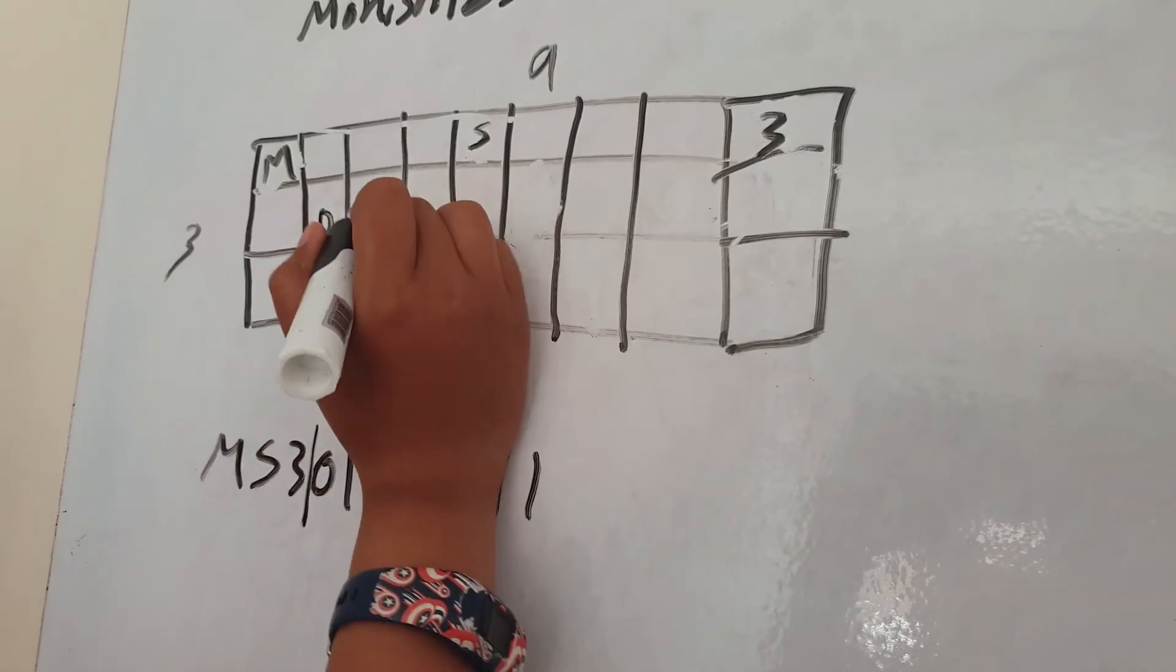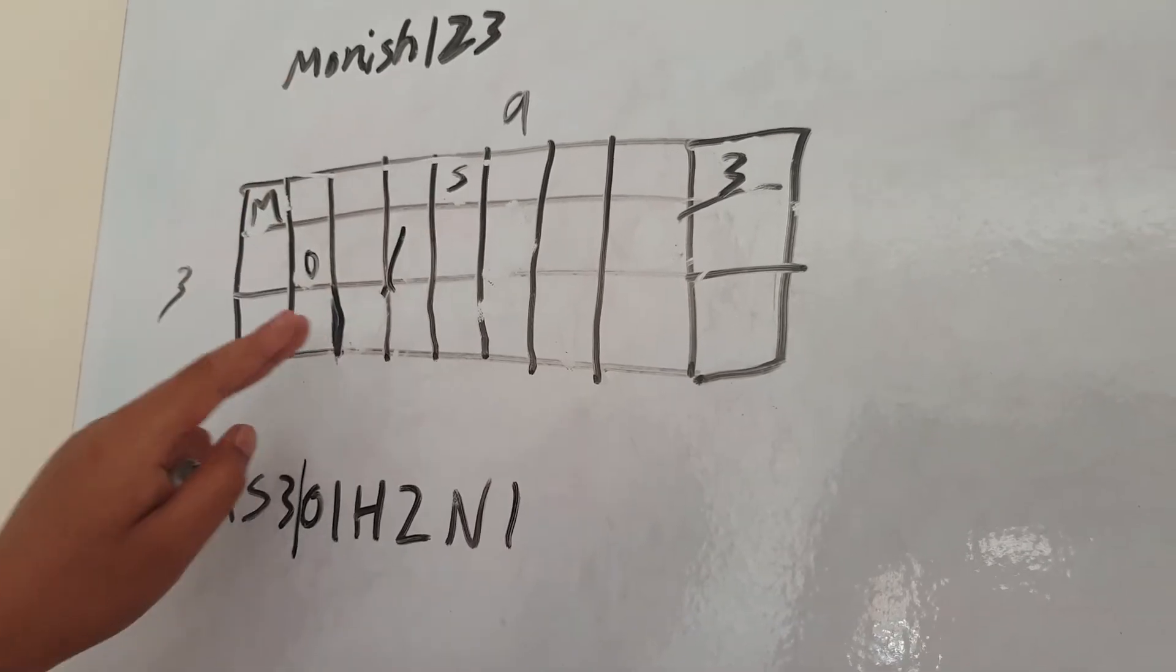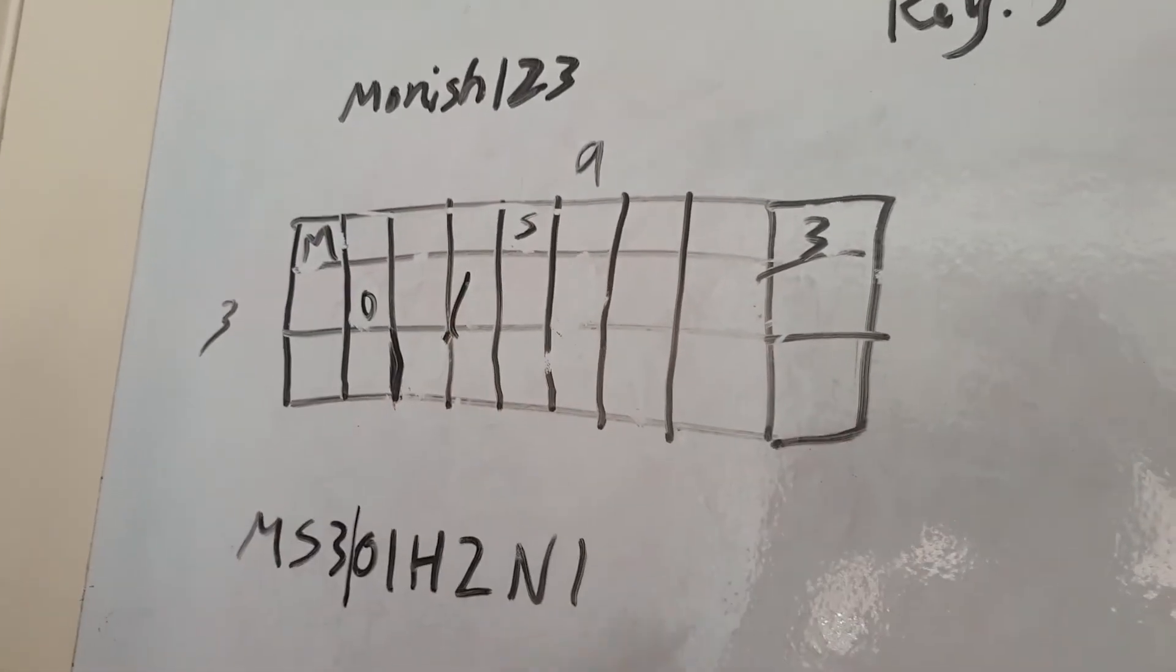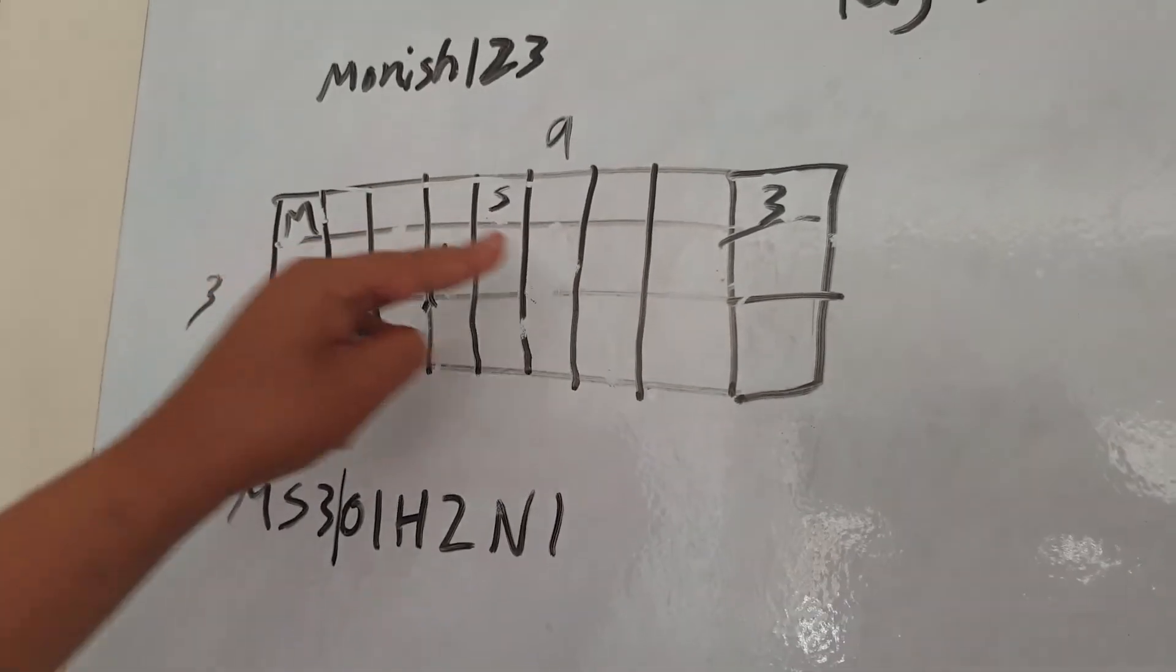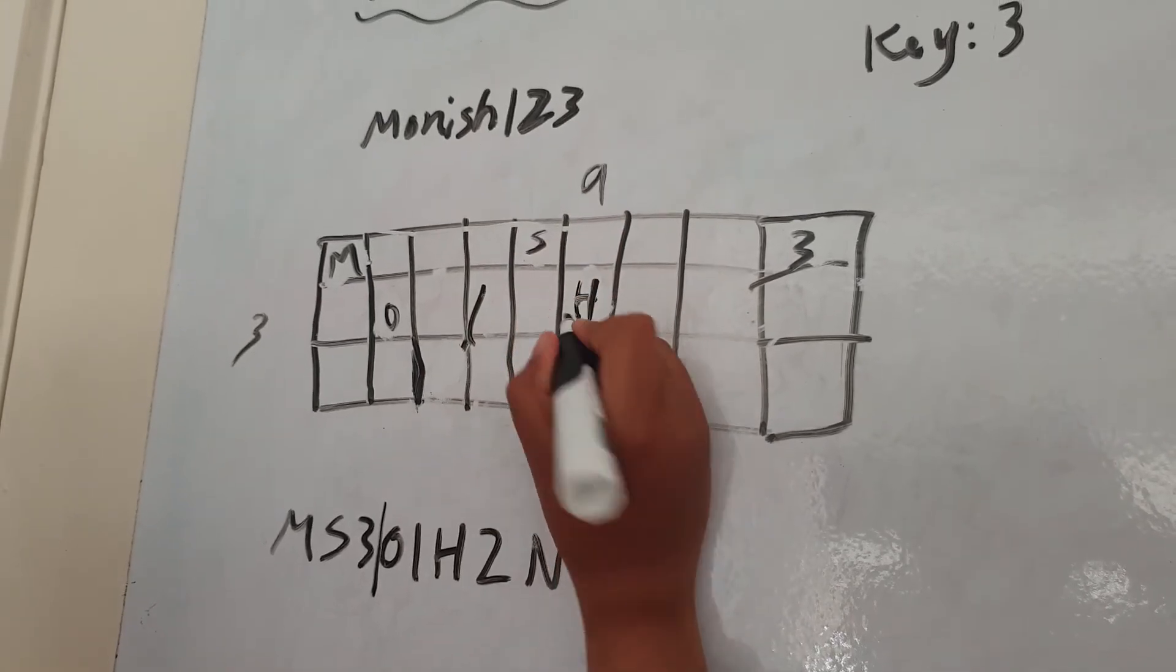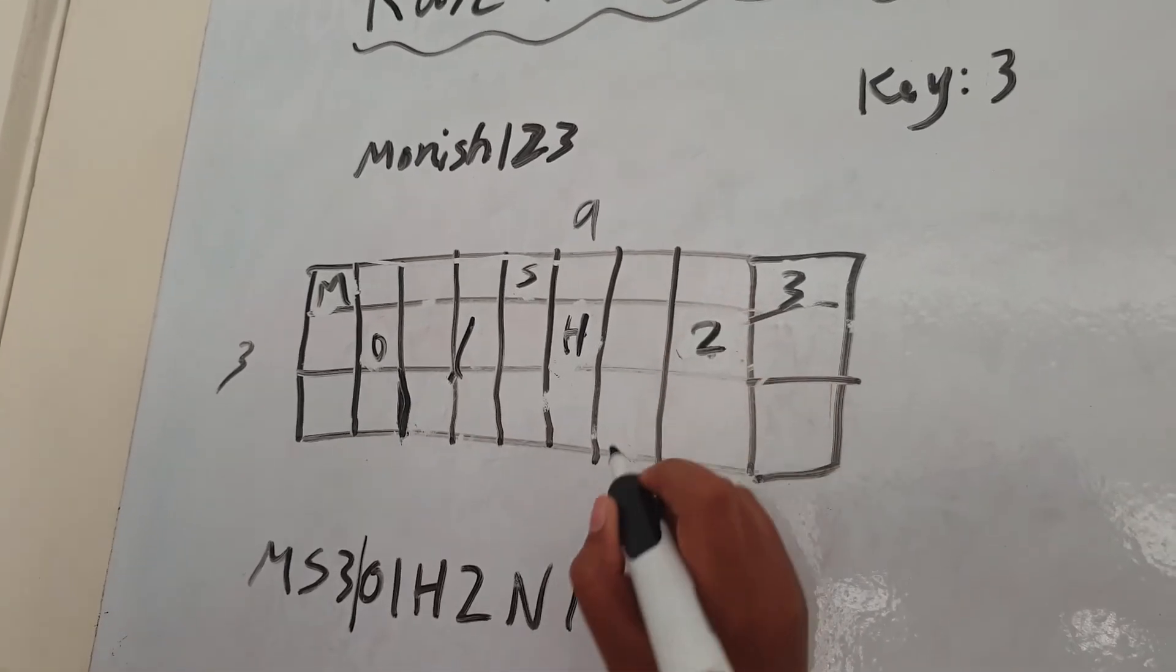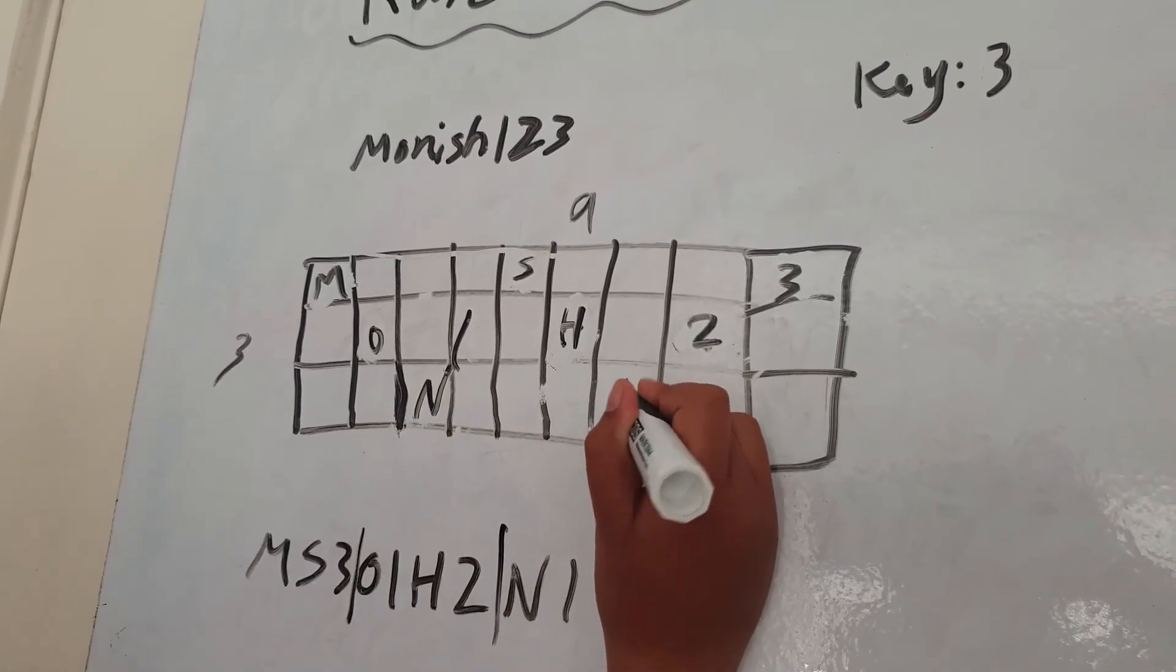And then O, and then I, and then you just imagine where it would go. Because you wouldn't just put the letter here or here or here at random places. You have to imagine it going diagonally and then placing the spots there. So there's this O, I, and then H and then two. And then there's N and one.